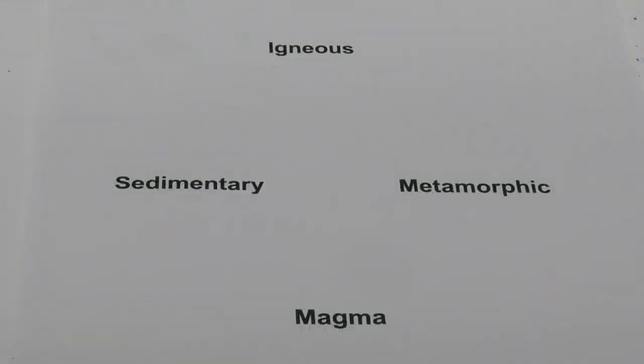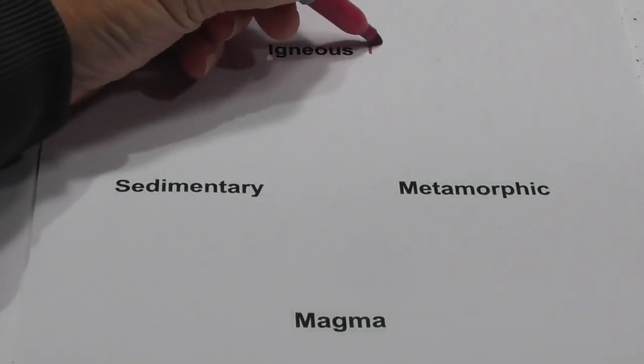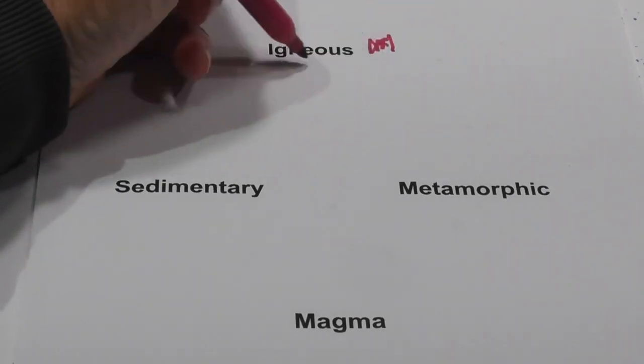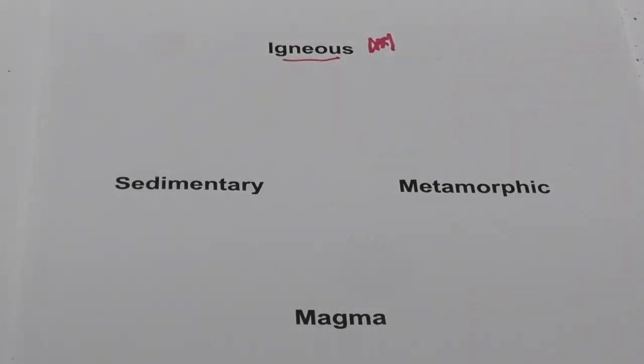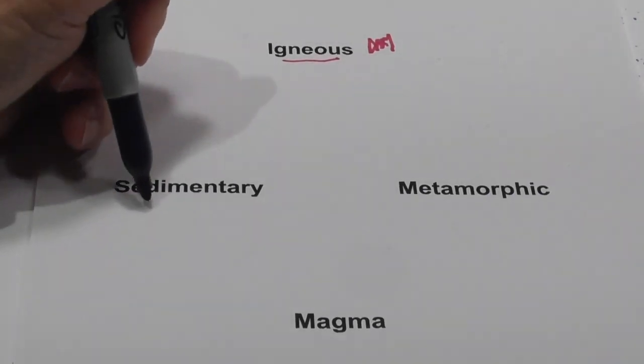Let's get started. We have the three major types of rocks of the rock cycle. We have igneous, which are born of fire. And then we have sedimentary that is born of, many of them come from sediments.